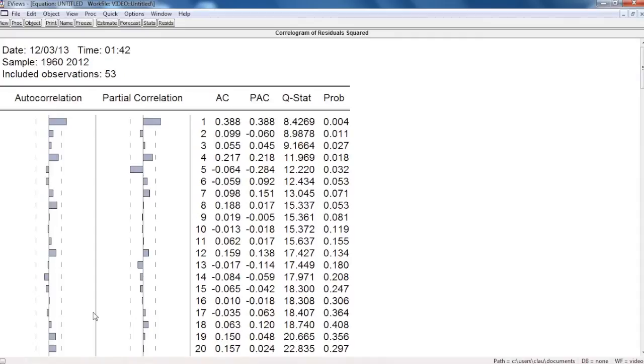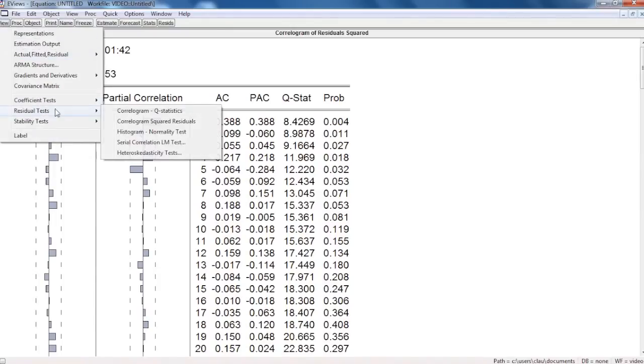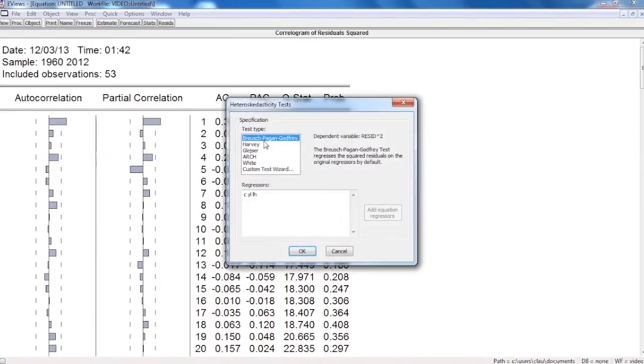Heteroskedasticity. The null hypothesis for these tests is that there is homoskedasticity, meaning the inexistence of heteroskedasticity in the model. The tests are Breusch, Pagan, and Godfrey.